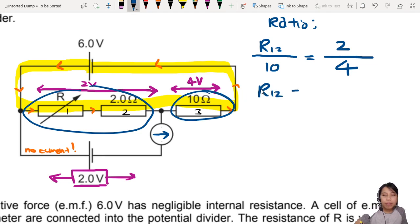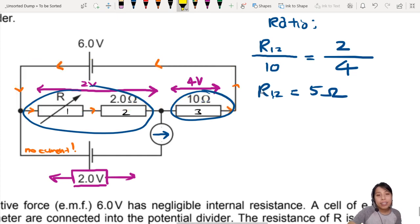So that will tell me that the combined resistance of 1 and 2 will be 5 ohm. Does that make sense? You look and see. If this is 4 volts and this is 2 volts, it means the resistance has to be half of 10. So 5 ohms. Fair enough?